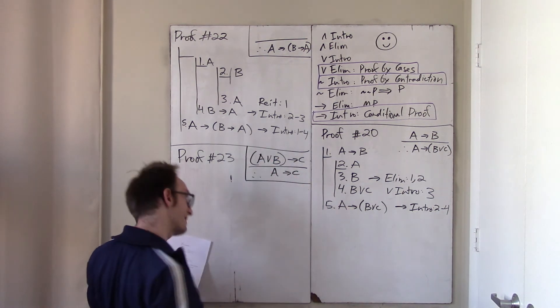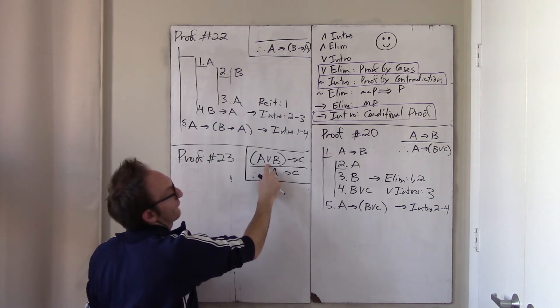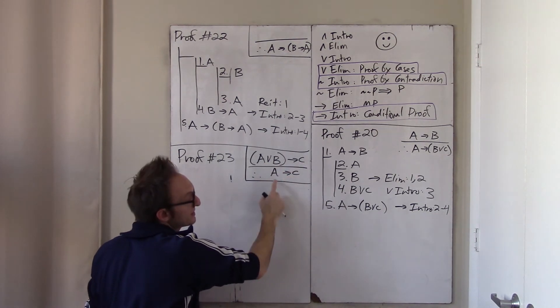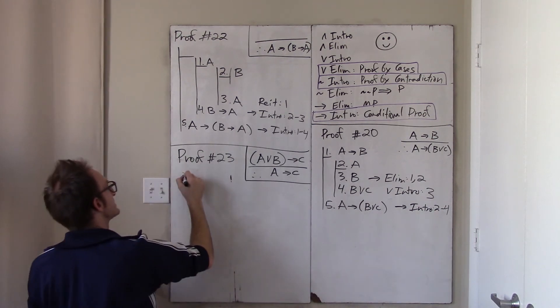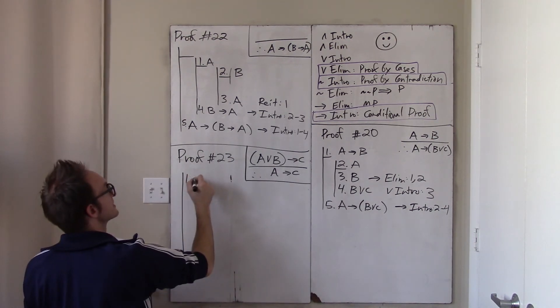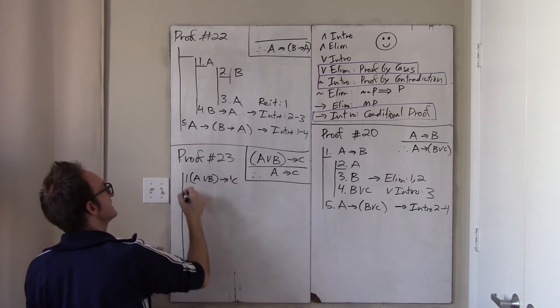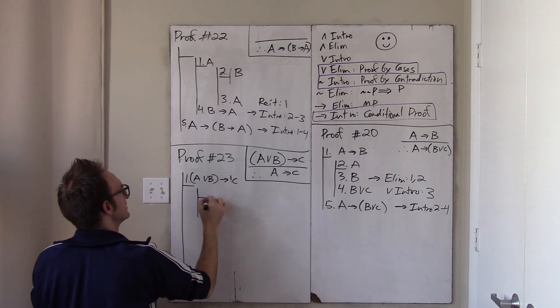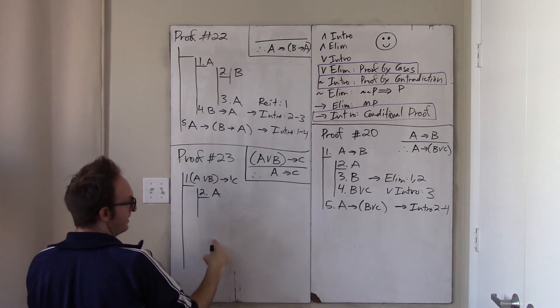then certainly if I know A, I can guarantee C. And, all right, we do it. Here's the premise. A or B implies C. I need to prove if A then C. Okay, there's only one thing to do. Assume A and aim for C. Well, from A, I can certainly or on a B. So, that's or intro two.